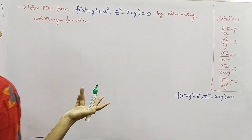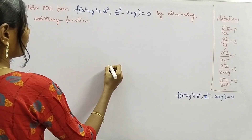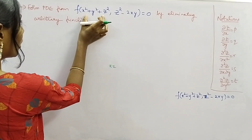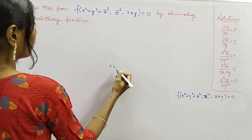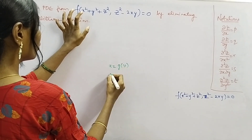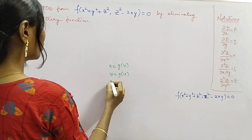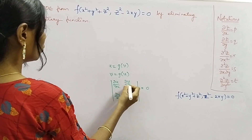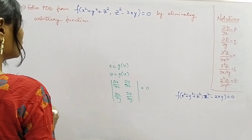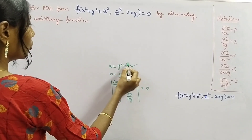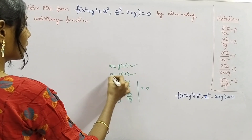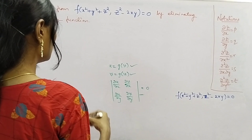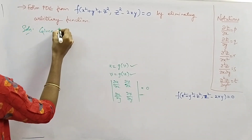We can solve this problem in three ways. If you consider one argument as u and the other as v, you can use u = g(v), or v = g(u), or you can use the determinant equal to zero — that is, the 2×2 determinant of ∂u/∂x, ∂u/∂y, ∂v/∂x, ∂v/∂y equal to zero. In this video I'll explain one method and show the final answer; we'll see the others in the next video.